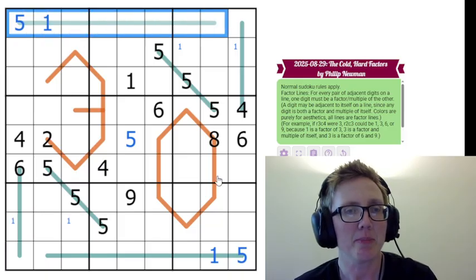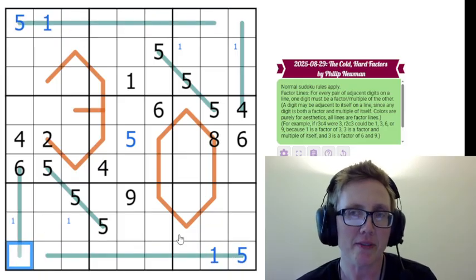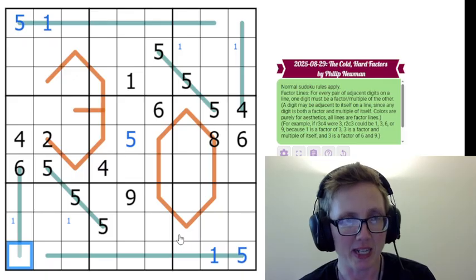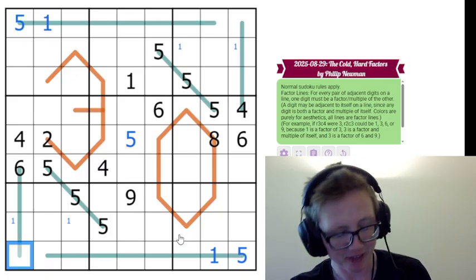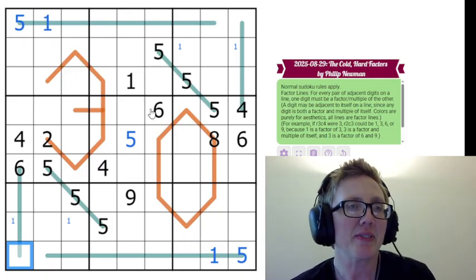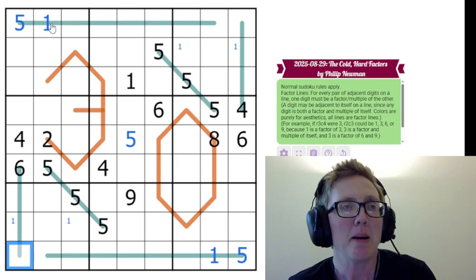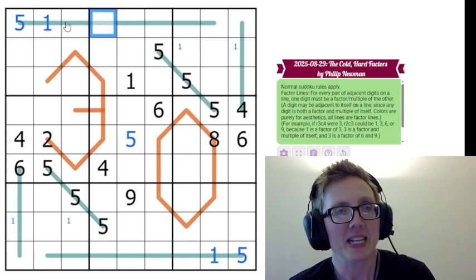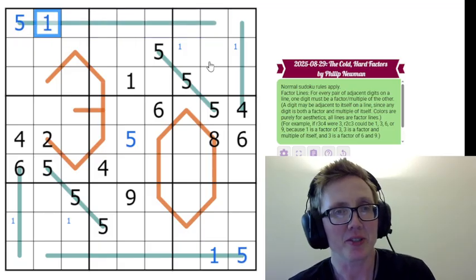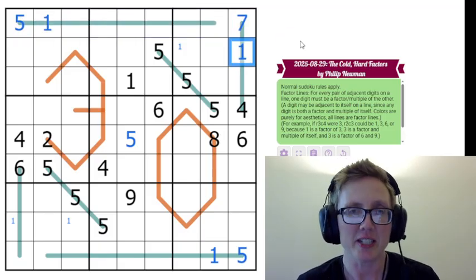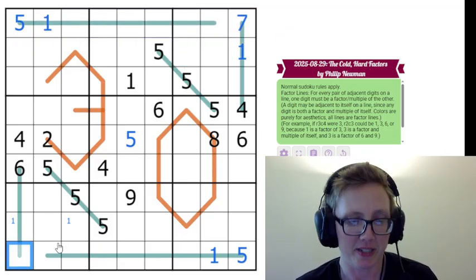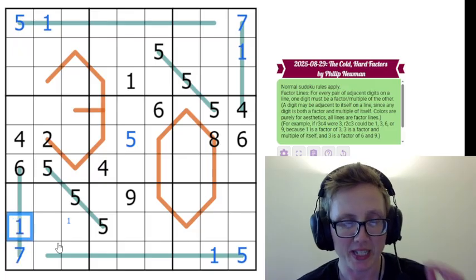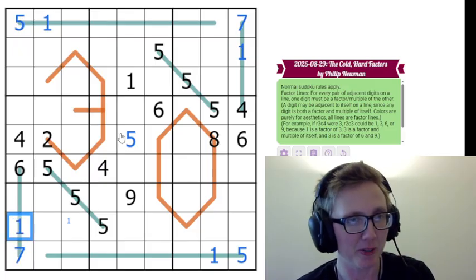Now the next question I ask myself is where does 7 go in the top row and where does 7 go in the bottom row? Because 7 also only has one factor. It's also prime and there is nothing that has 7 as a factor within the realm of Sudoku. So 7 can only ever go next to a 1, but can't go there because it would have to have something on its other side, so it has to go over here with a 1 right below it. And the same thing is going to happen right there. So that's a 7 and a 1, and a 7 and a 1.